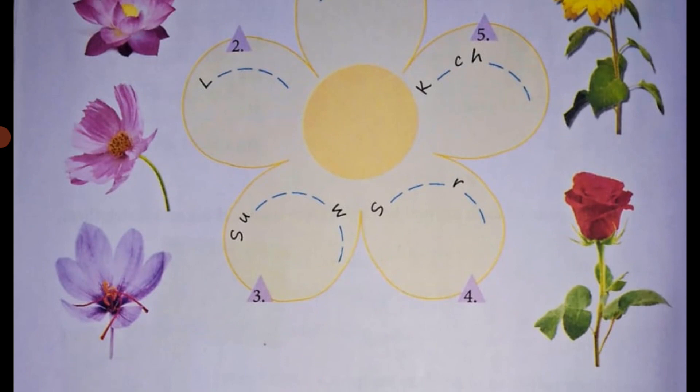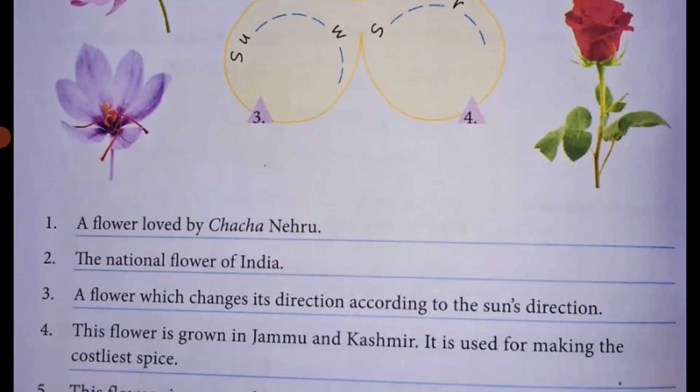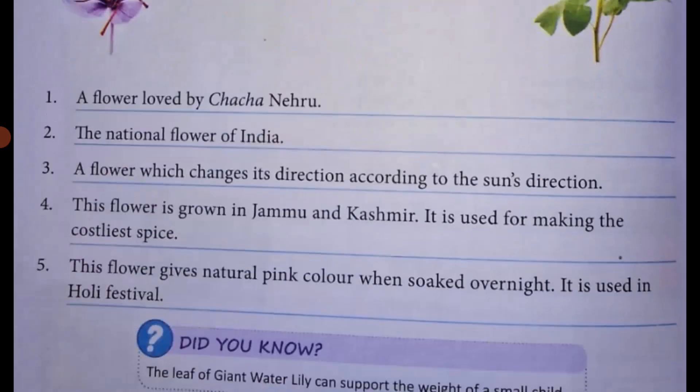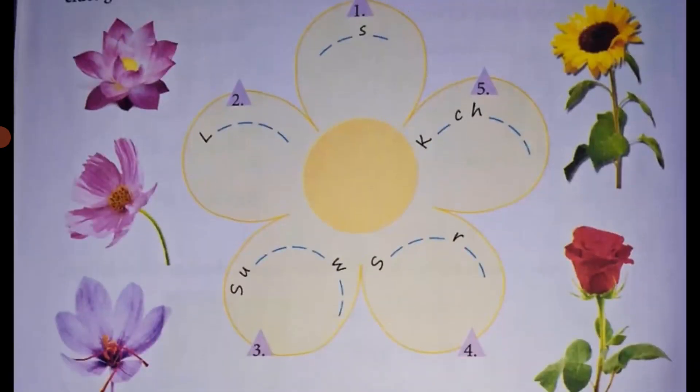This flower gives natural pink color when soaked overnight. It is used in holy festival. The answer starts with the letter K and the answer is Kachnar. K-A-C-H-N-A-R. Kachnar.